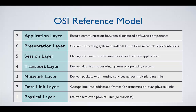The data link layer groups the bits into frames and actually addresses them so that the data can get from one node to another within a local area network. In a local area network, you typically share physical media — you plug your cables into a hub, for example — and need mechanisms that help you get the data where it's supposed to go within that local network. So the addresses at this layer are for local machines only. They are not IP addresses.